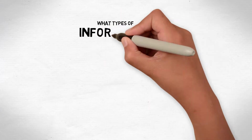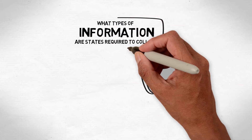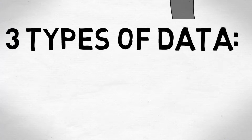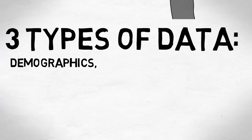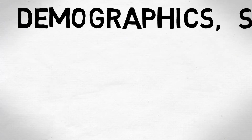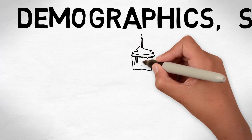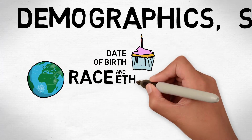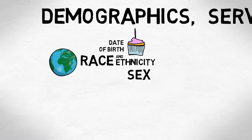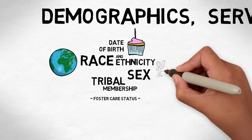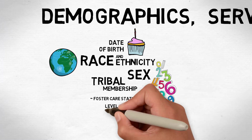Let's review what types of information states are required to collect. States collect three different types of information for NYTD: demographics of the youth receiving services, services they are provided, and outcomes they achieve. By demographics, we mean general information about the youth like their date of birth, race and ethnicity, sex, tribal membership, foster care status, and education level.